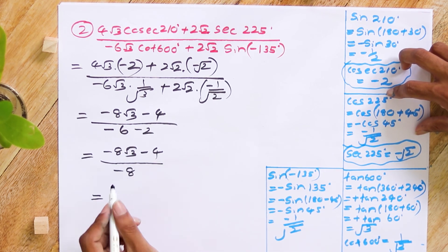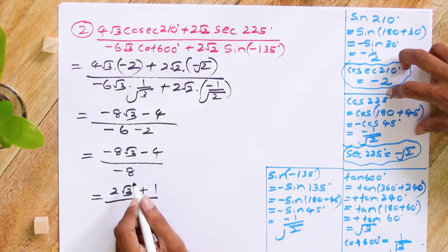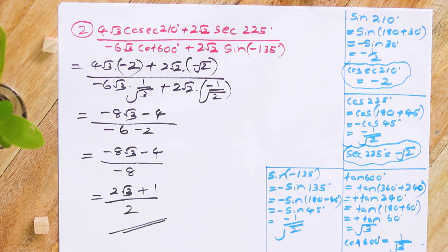So the answer: dividing up and down by -4, -8√3 divided by -4 gives +2√3, and -4 divided by -4 gives +1, and -8 divided by -4 gives +2. So this will be the answer, and my two examples are over. If you want to master it, you must practice more trigonometric questions. My goal is to cover complete theory while giving example questions to ensure you understand. Practice more — it makes you perfect. See you in the next lesson, goodbye.